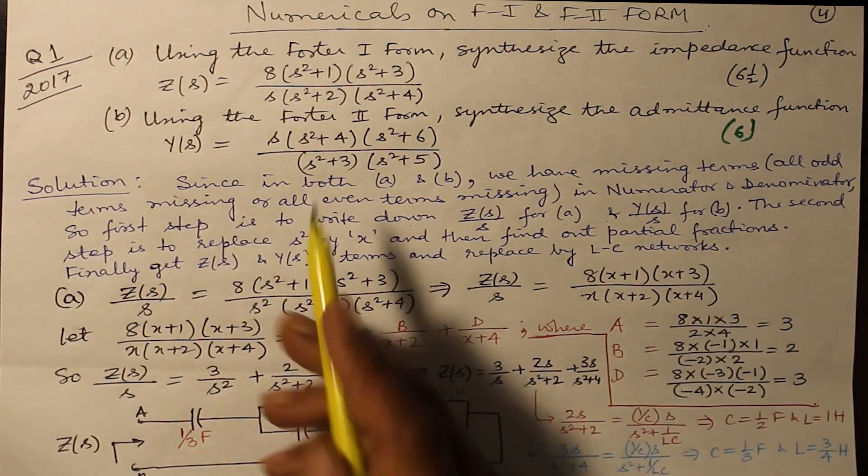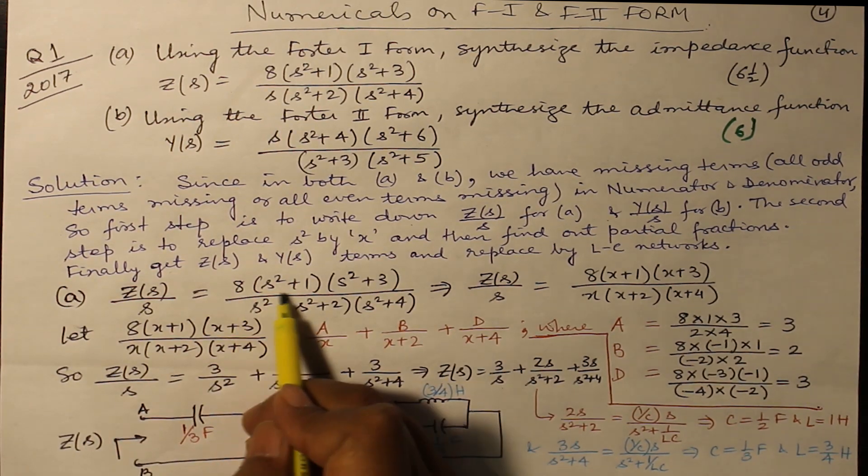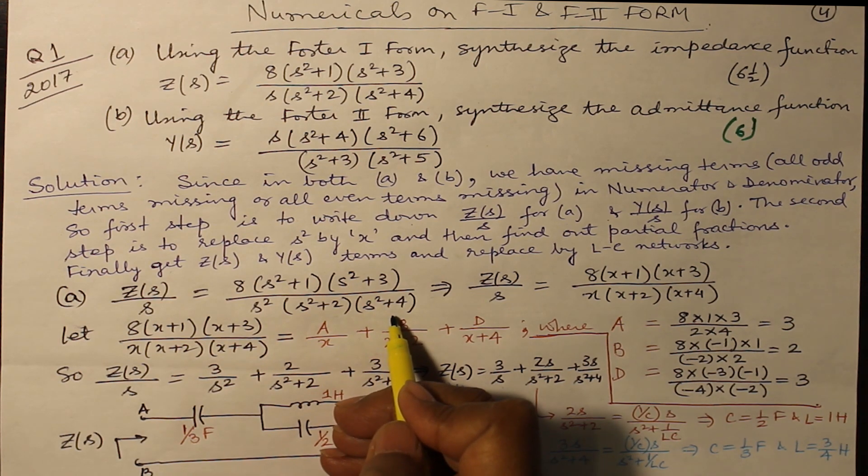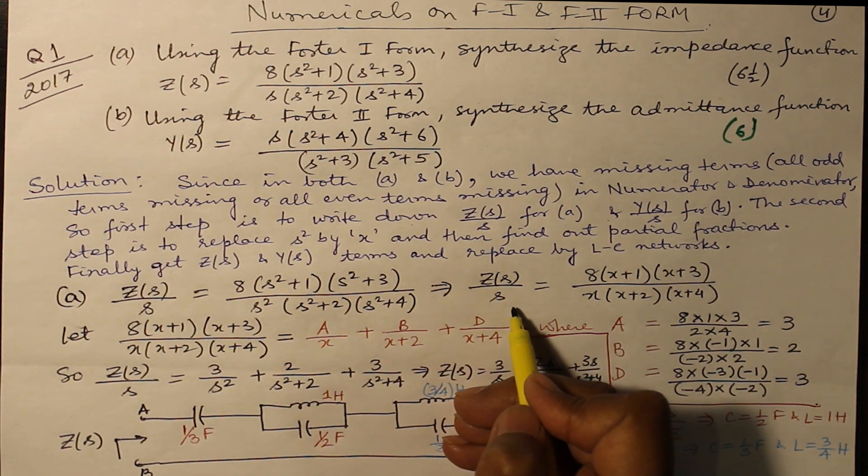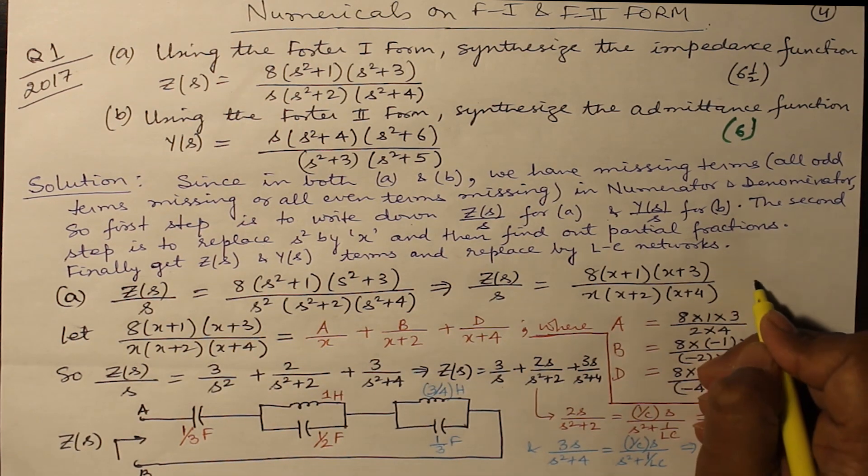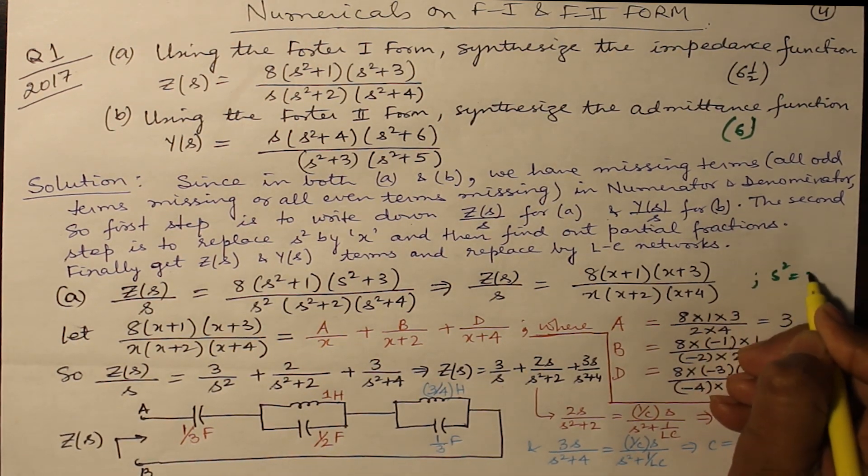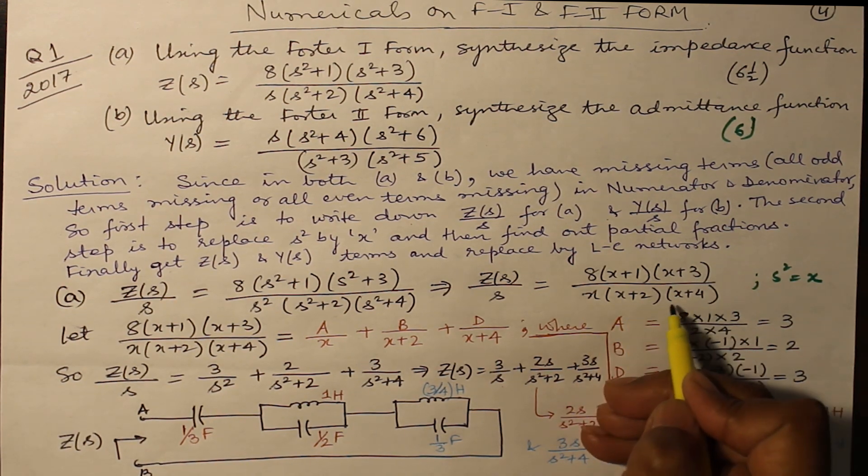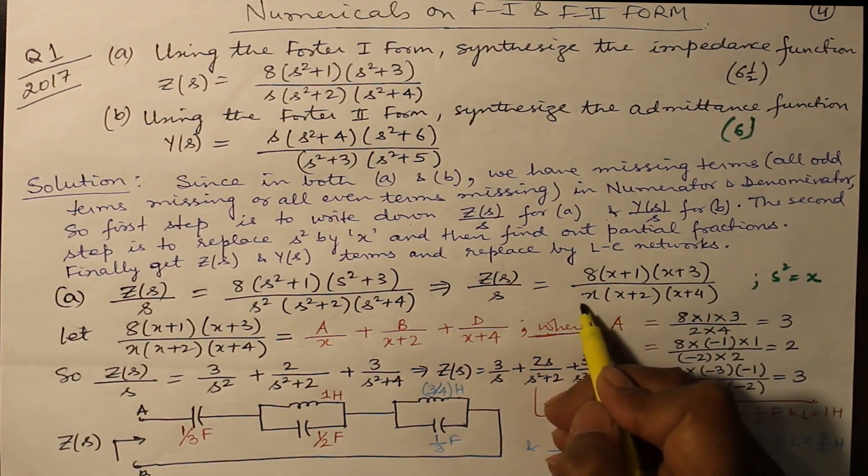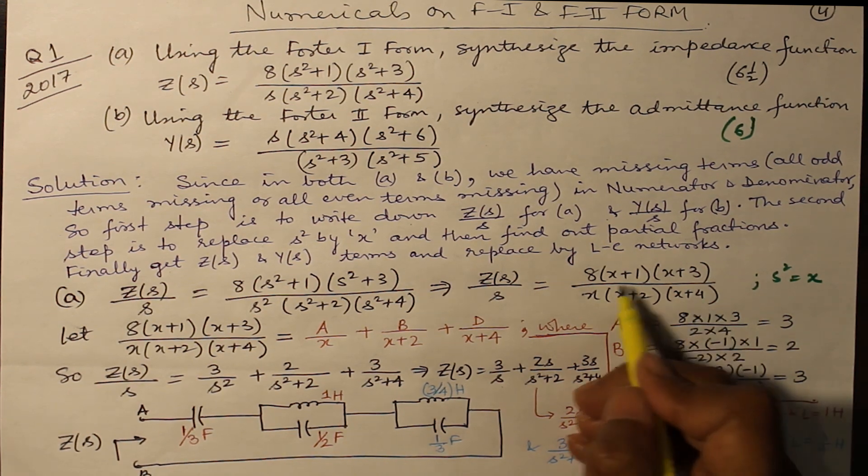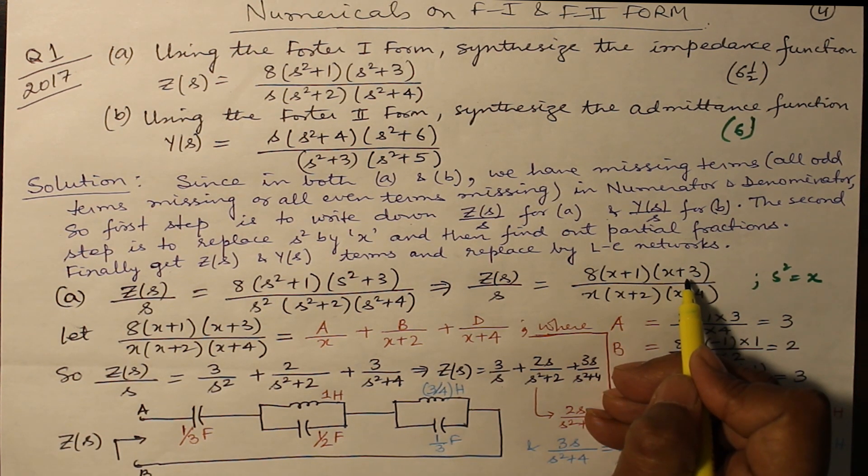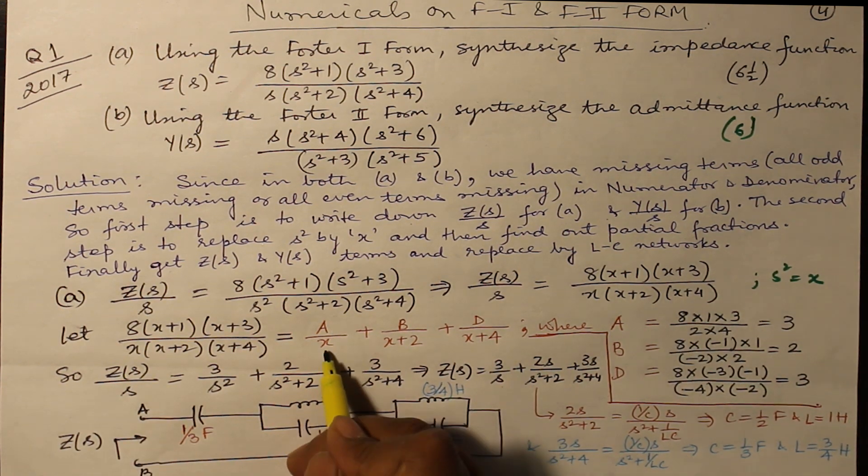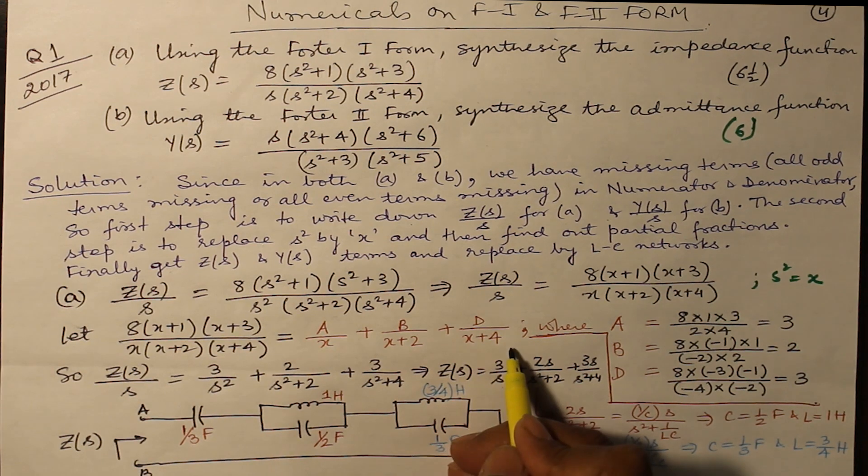Z(s) over s, first step, gives you (8s² + 1)(s² + 3) divided by s²(s² + 2)(s² + 4). So Z(s) by s is equal to, replacing s² by x: (8x + 1)(x + 3) divided by x(x + 2)(x + 4). You are having cubic power in the denominator and quadratic in the numerator, so you can proceed with the partial fraction. We write it as a/x + b/(x+2) + d/(x+4).